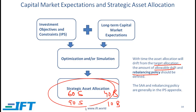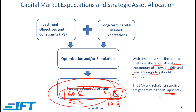The IPS should define a rebalancing policy. For example, if there is a drift, do we come back exactly to this strategic asset allocation or do we come back within a certain range? That is our rebalancing policy, which has to be explicitly stated. This information is often found in the appendix.